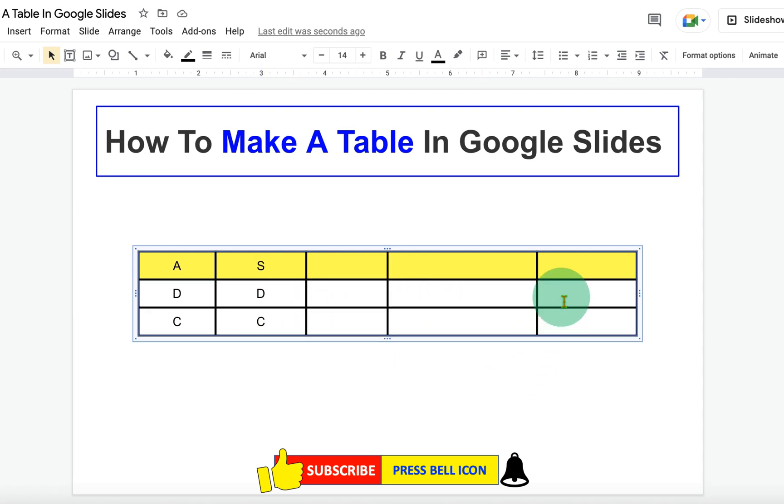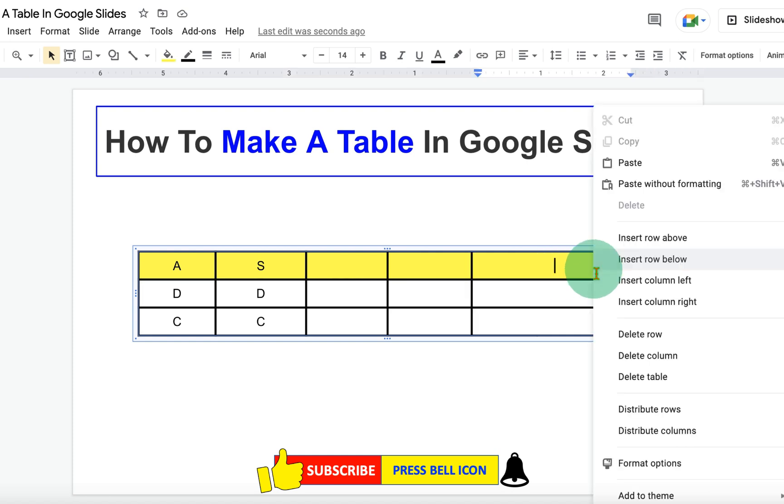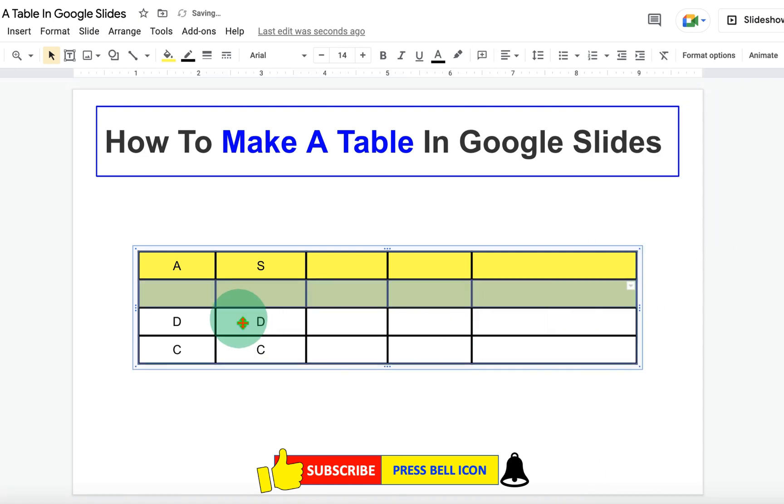And if you want to add cells or column, right click and you will see the option Insert Row Above, Insert Row Below. So, select the option you want. For example, we will select Insert Row Below. And as you can see, we have inserted a row below.